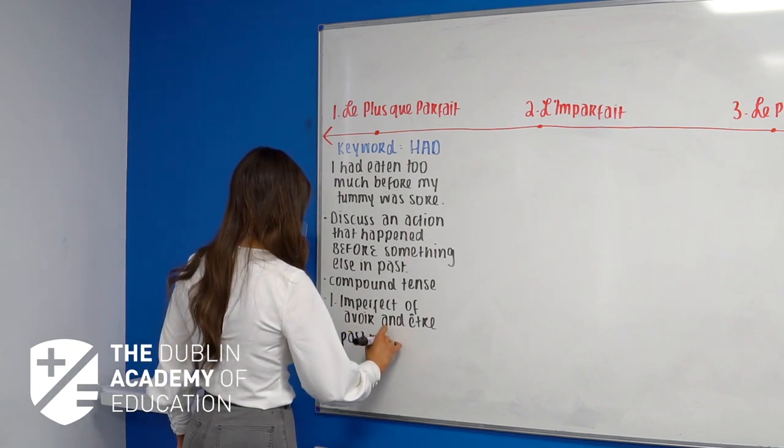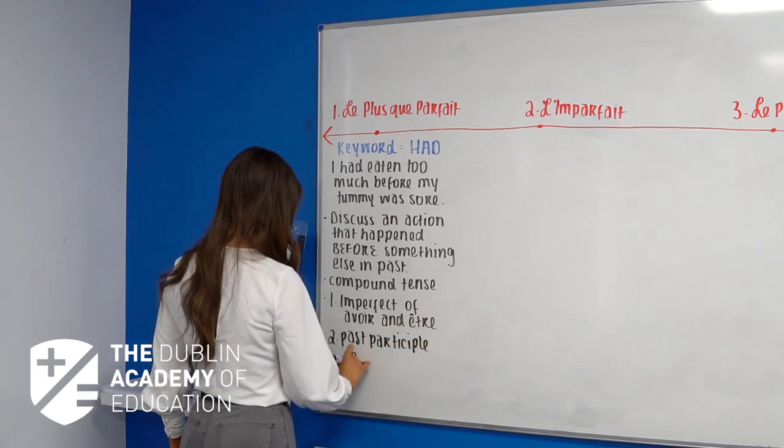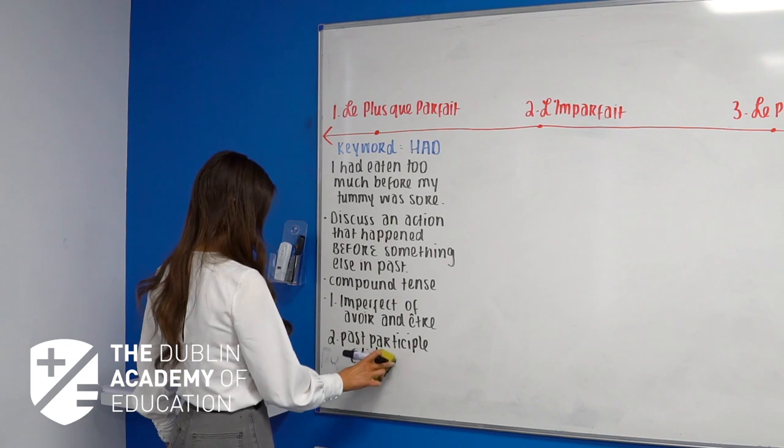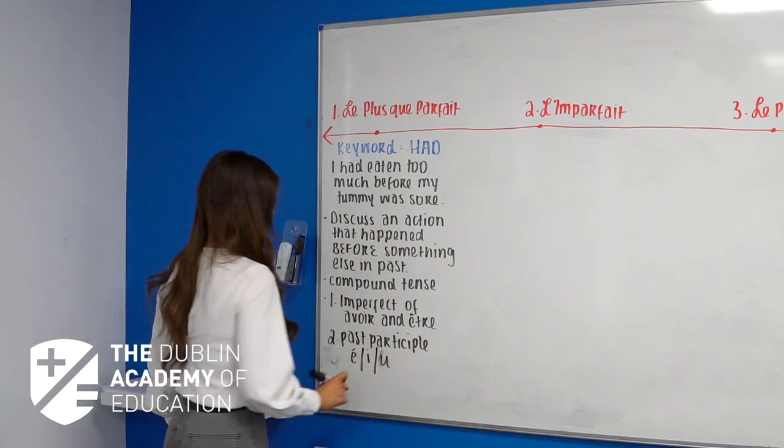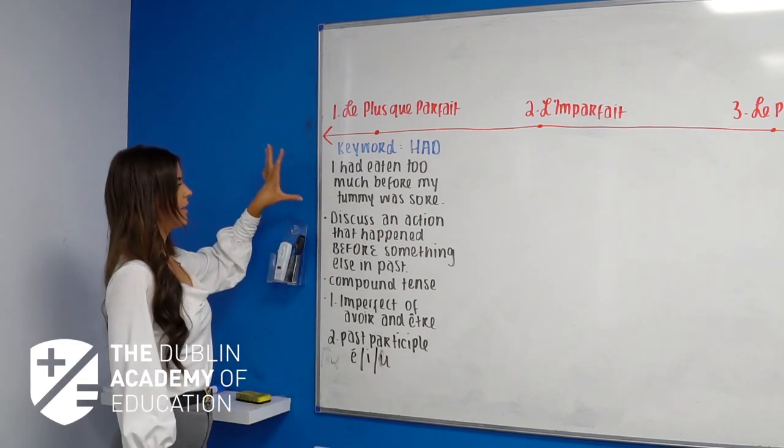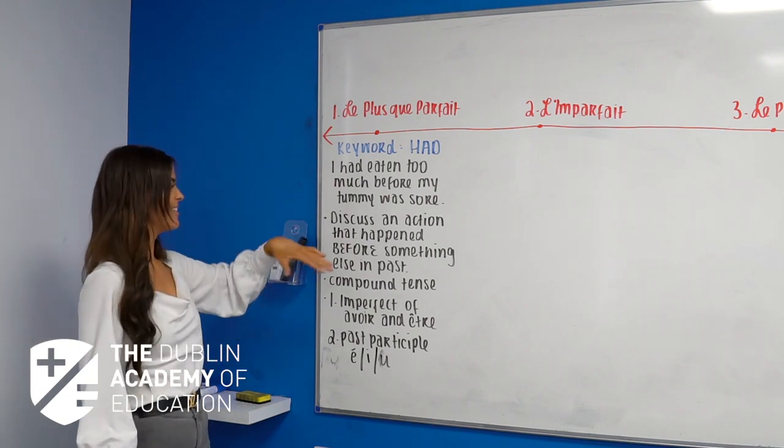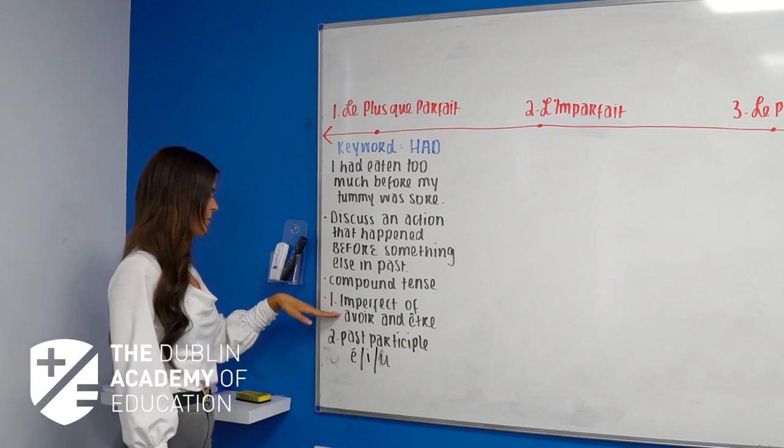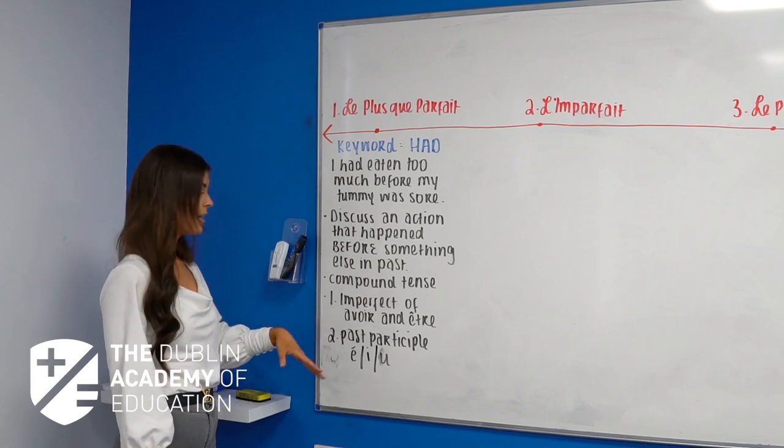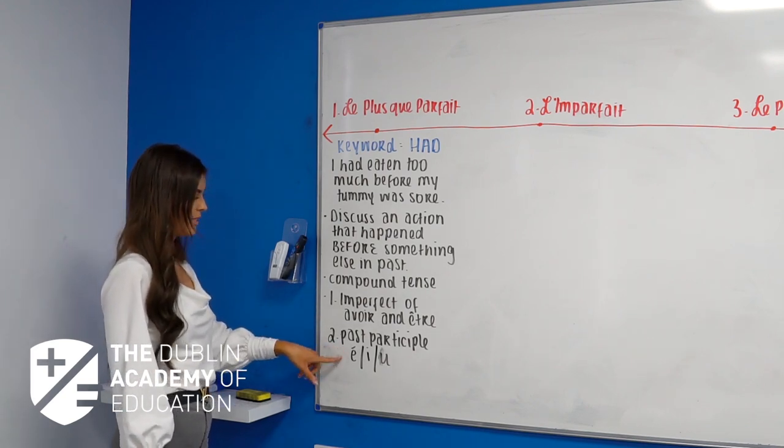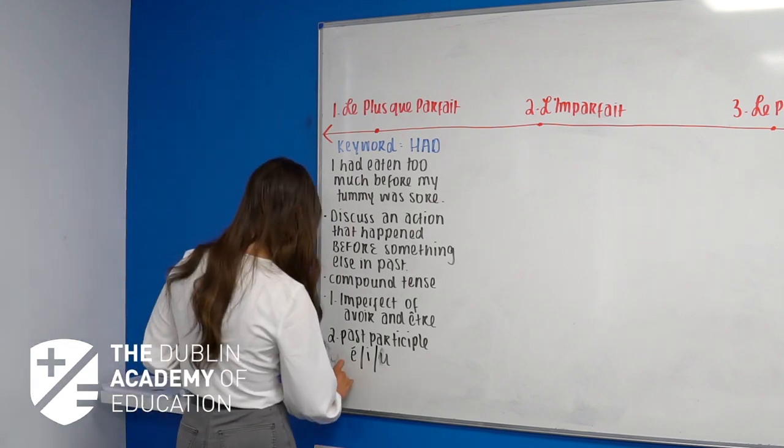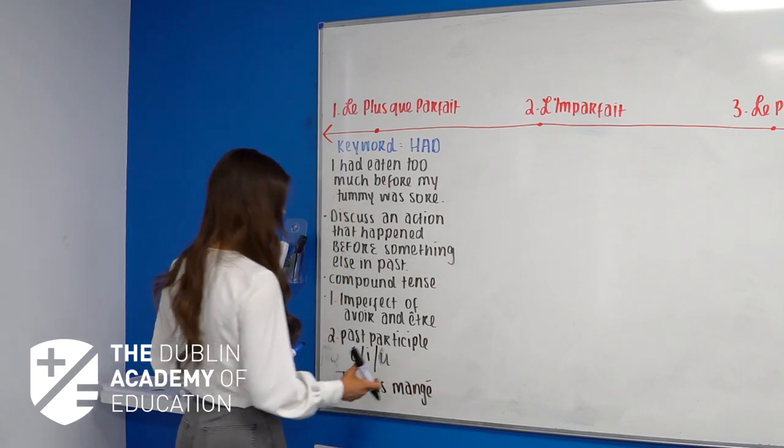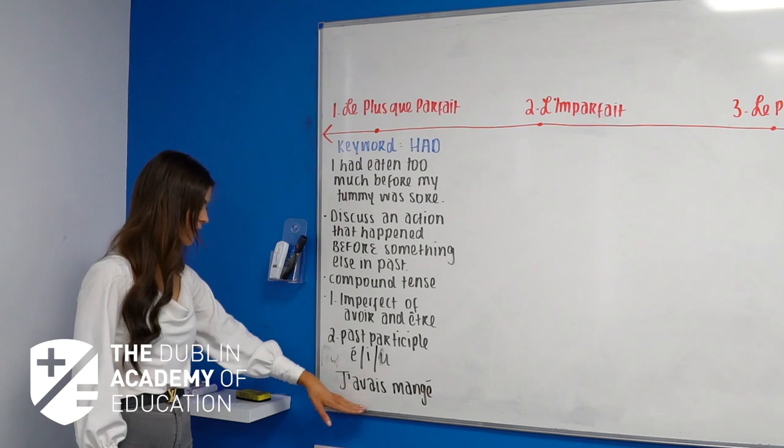The second part is going to be our past participle. An -er verb is going to change to é, an -ir verb changes to i, and an -re verb changes to u. Quick summary: the more than past - what happened before something else in the past. Compound tense: part one is the imperfect of avoir and être, which are auxiliary verbs that tell us who's doing the action. Then the past participle tells us the actual action itself. For example, to say I had eaten, I would say j'avais mangé.